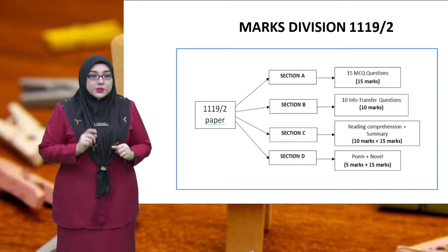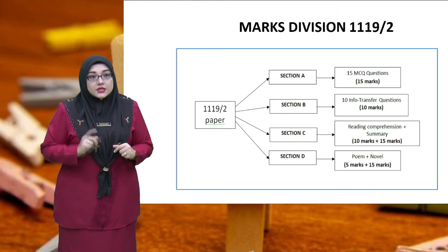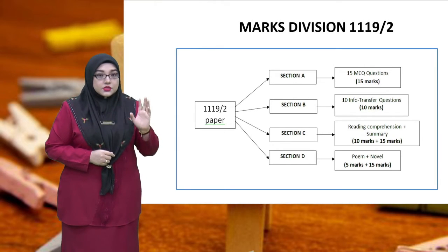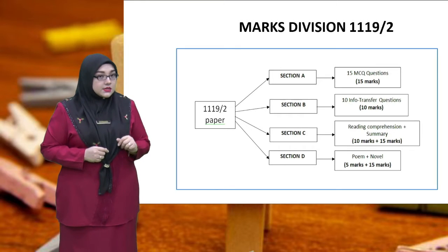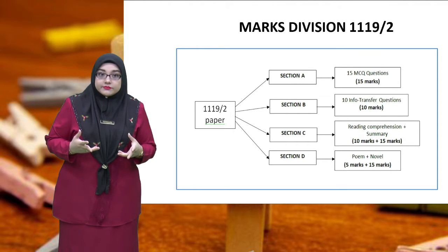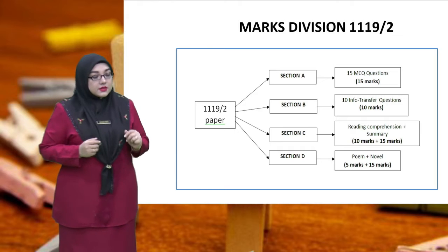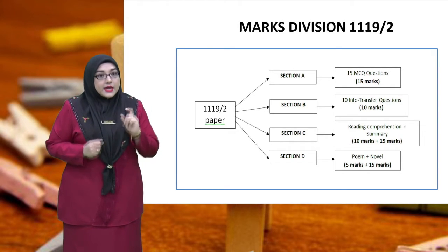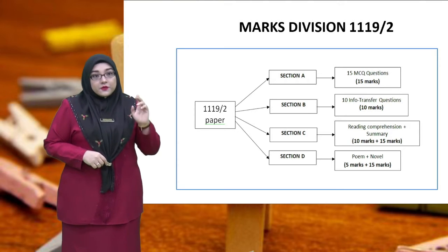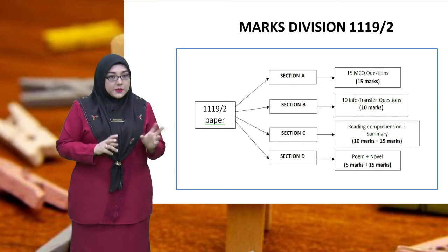Now let's look at the mark division for 1119/2. For Paper 2, there are 4 sections: Section A, B, C, and D. For Section A, there are 15 multiple choice questions carrying 15 marks — one mark per question. Although it may look easy because there are choices, you must use correct grammar and language to choose the correct answer. For Section B, there are 10 info transfer questions carrying 10 marks, with one mark per blank.